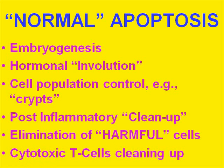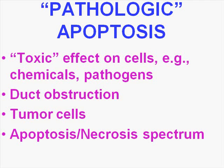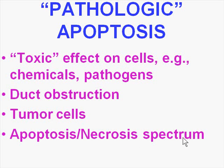There is also a type of apoptosis called pathologic apoptosis, and in pathologic apoptosis it's not a pure normal replacement. Sometimes it's associated with pathologic processes such as obstruction of a duct, tumor cells, and toxic effects of chemicals and pathogens. This shows you that there is a spectrum between pure replacement of cells called apoptosis and death of cells due to pathogens and other things. So remember, apoptosis and necrosis is a spectrum.